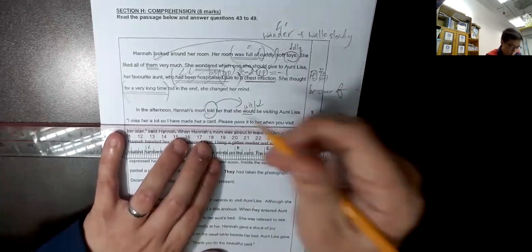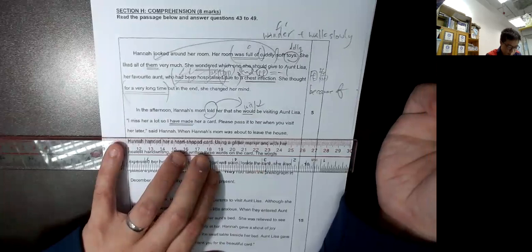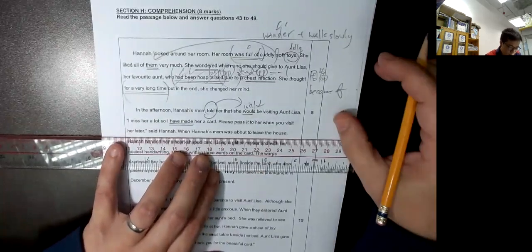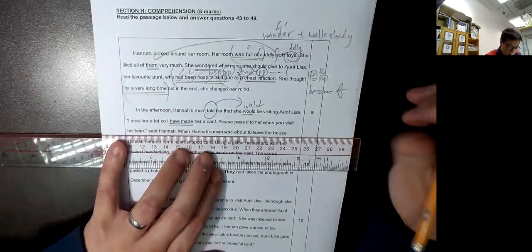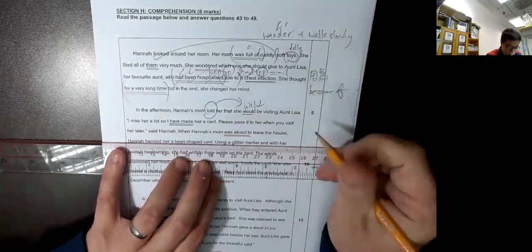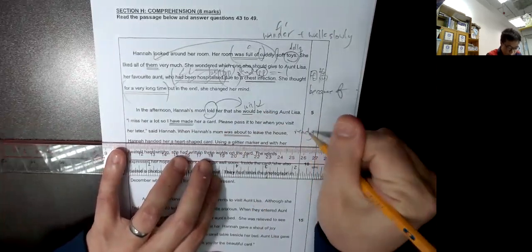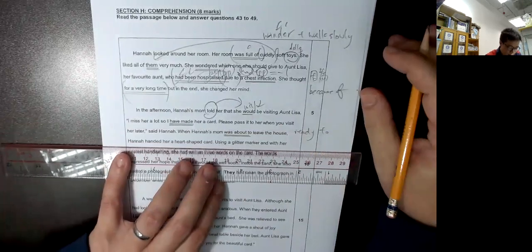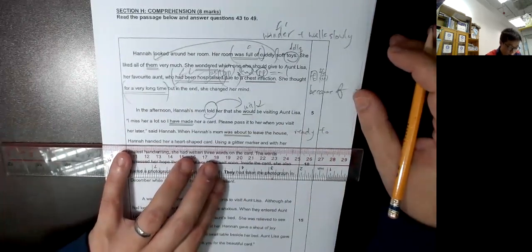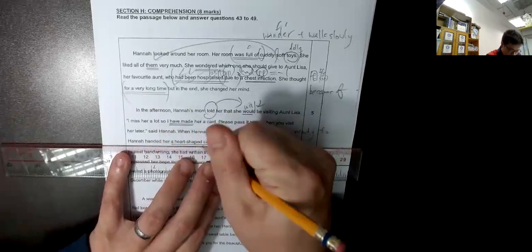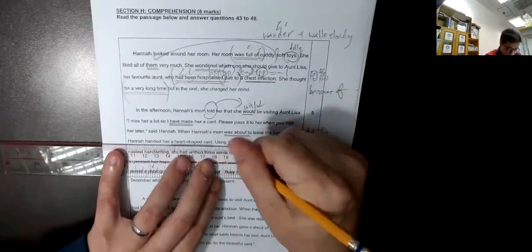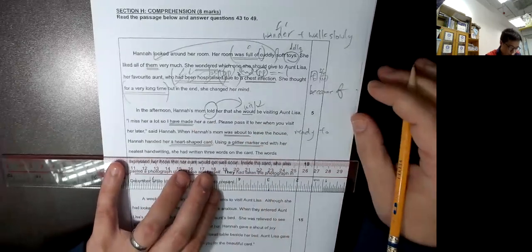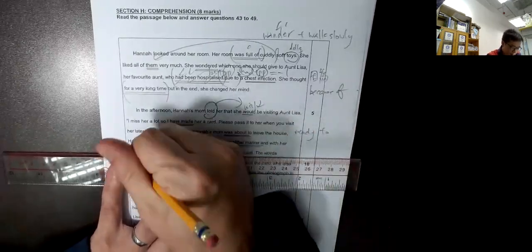So I have made her a card, present perfect, has F加PP. Please pass it to her when you visit her later, said Hannah. And Hannah's mom was about to leave. What's about, 即是預備, 即是 ready. Ready to leave her home, Hannah handed her heart-shaped card. 心形的 heart-shaped card, and using a glitter marker. 閃亮亮的 marker, glitter marker, and with her neatness handwriting. Neat 是整齊.